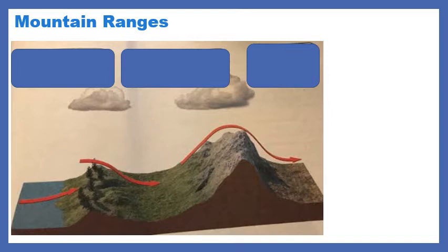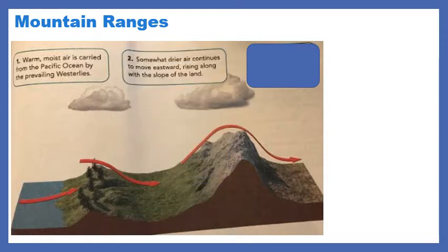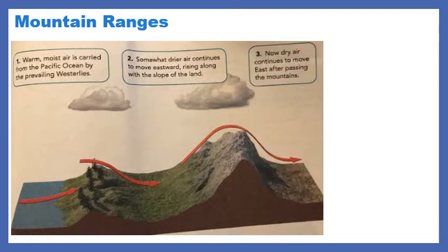Now let's talk about how mountain ranges affect precipitation. This diagram is from your textbook on page 389. We're watching wind blow in from an ocean over a mountain range. Follow the red arrows showing wind blowing from the ocean to the mountain and over. Warm, moist air blows in from the ocean — in this case the Pacific — onto the land, and as it travels, it loses some moisture and humidity, becoming a little bit drier. By the time it goes over the mountain, it is pretty dry.